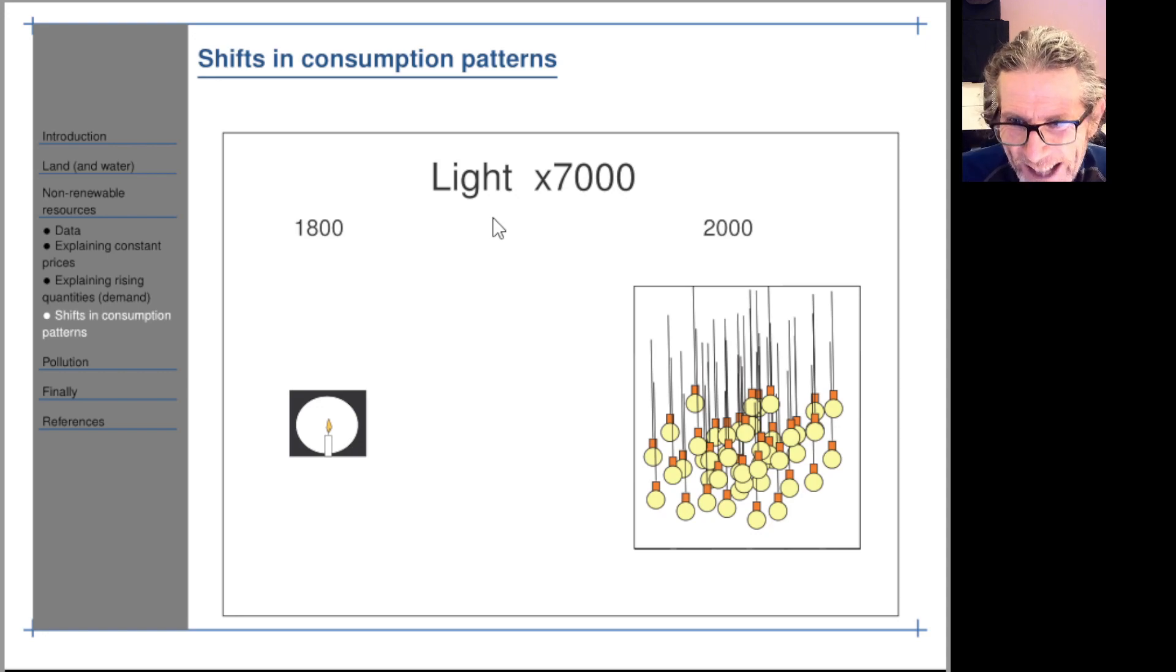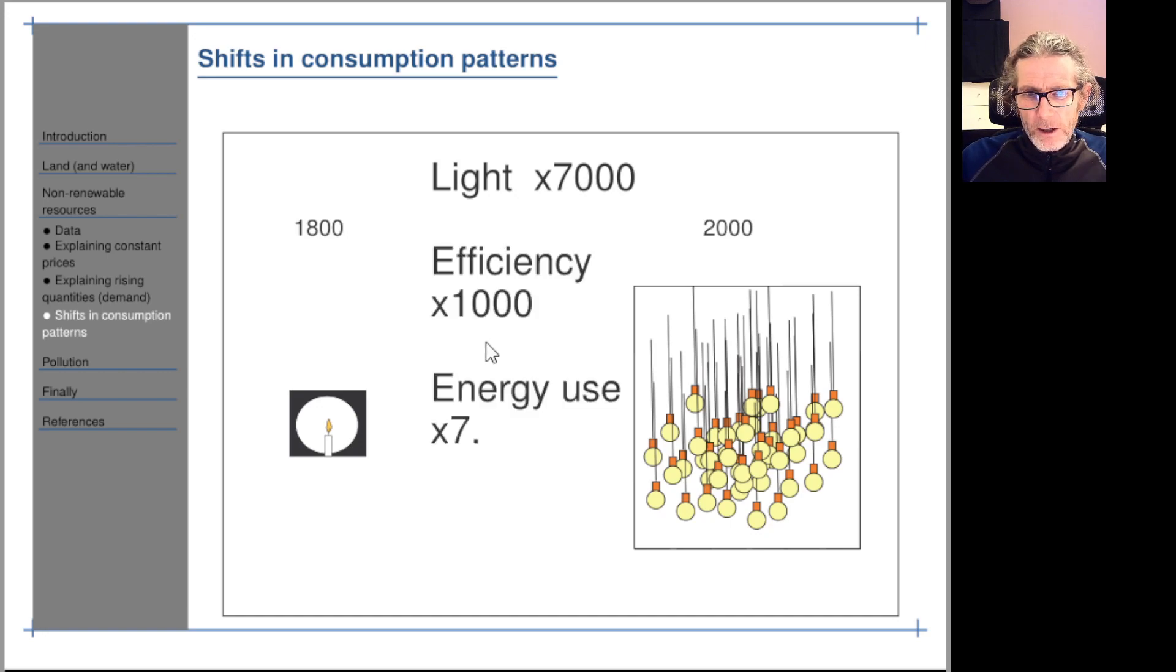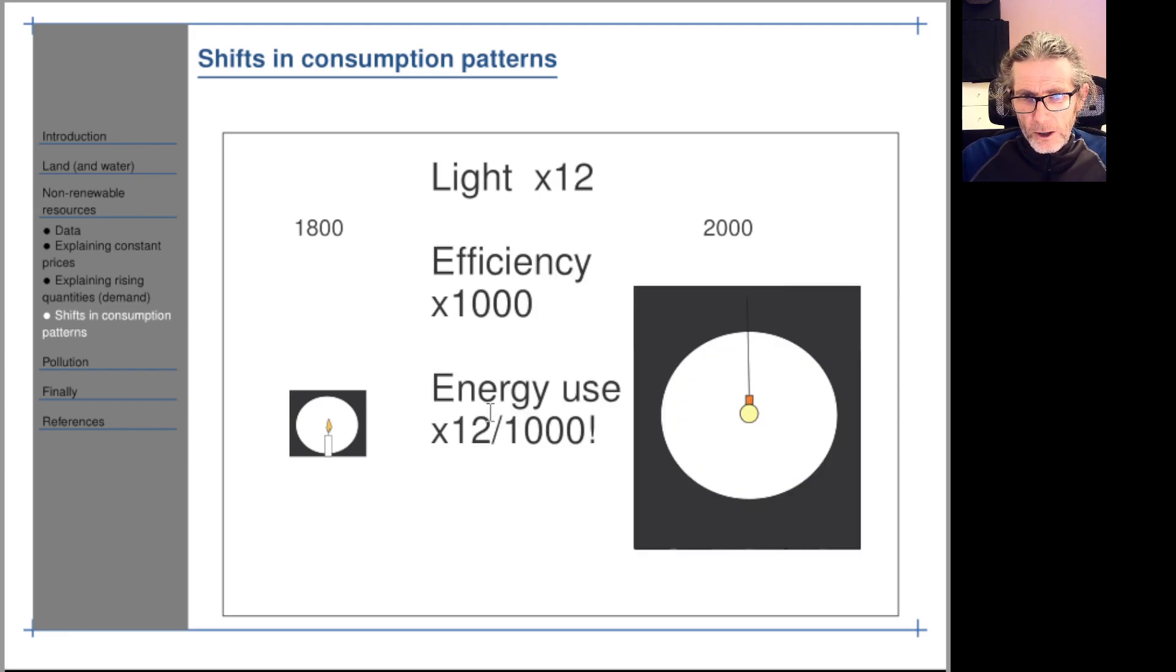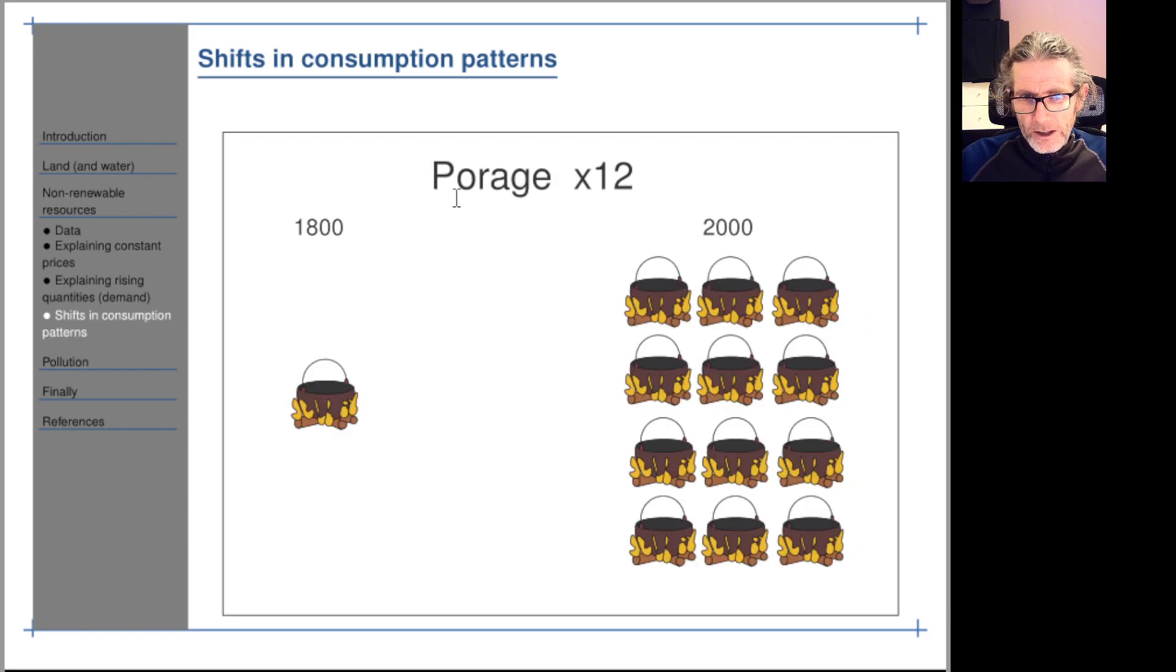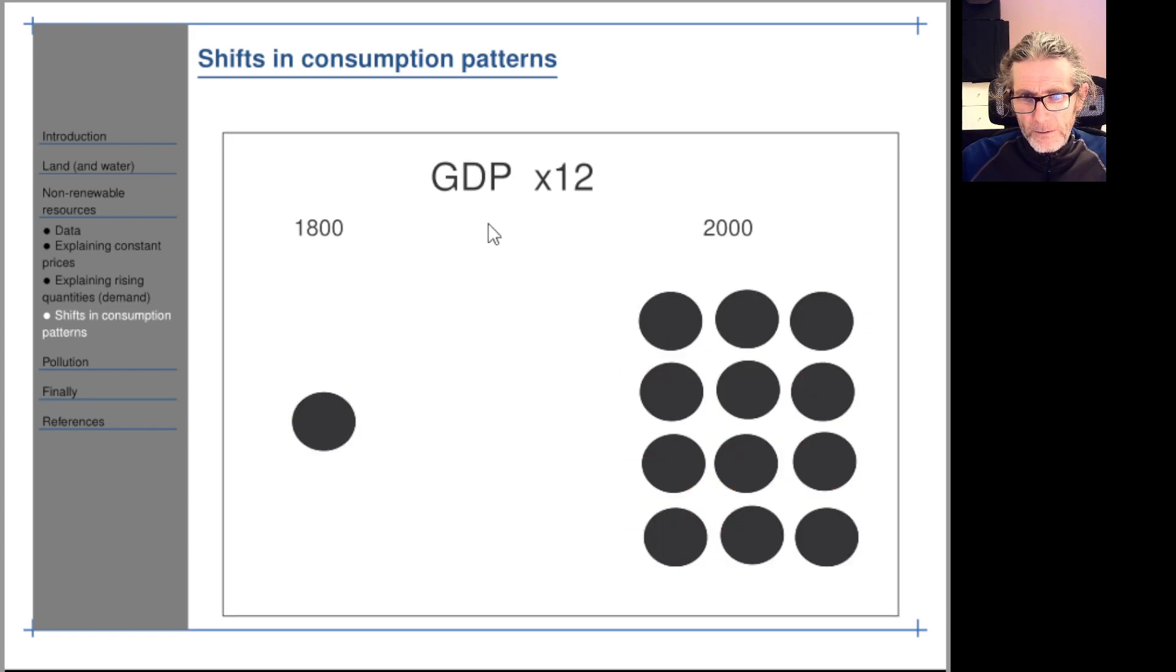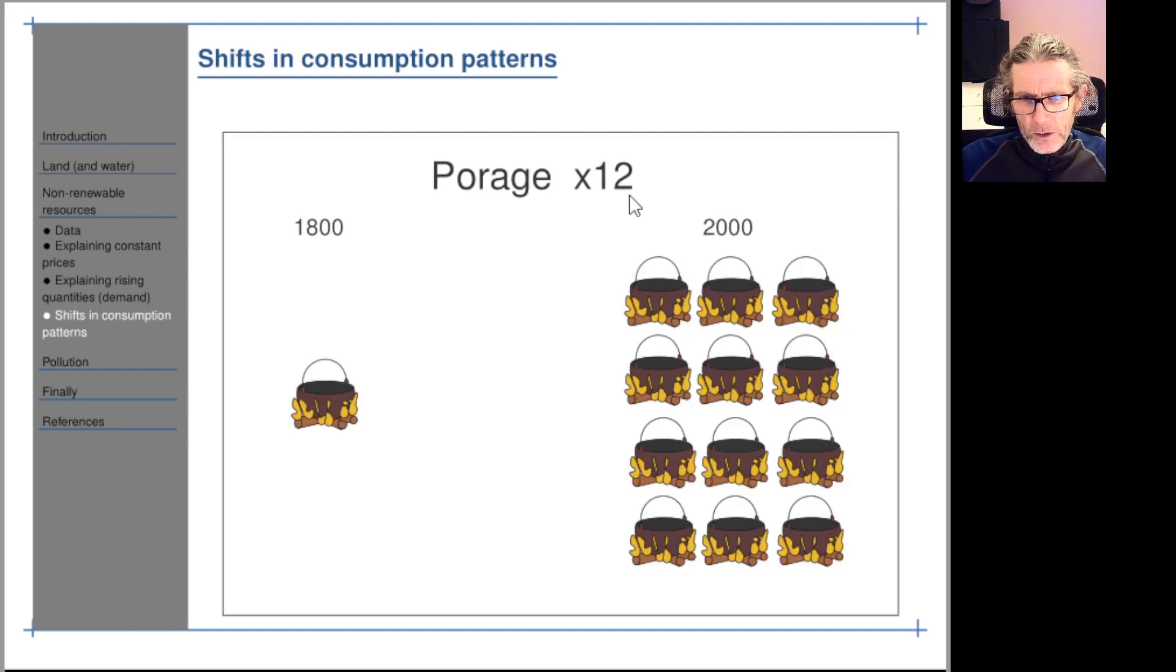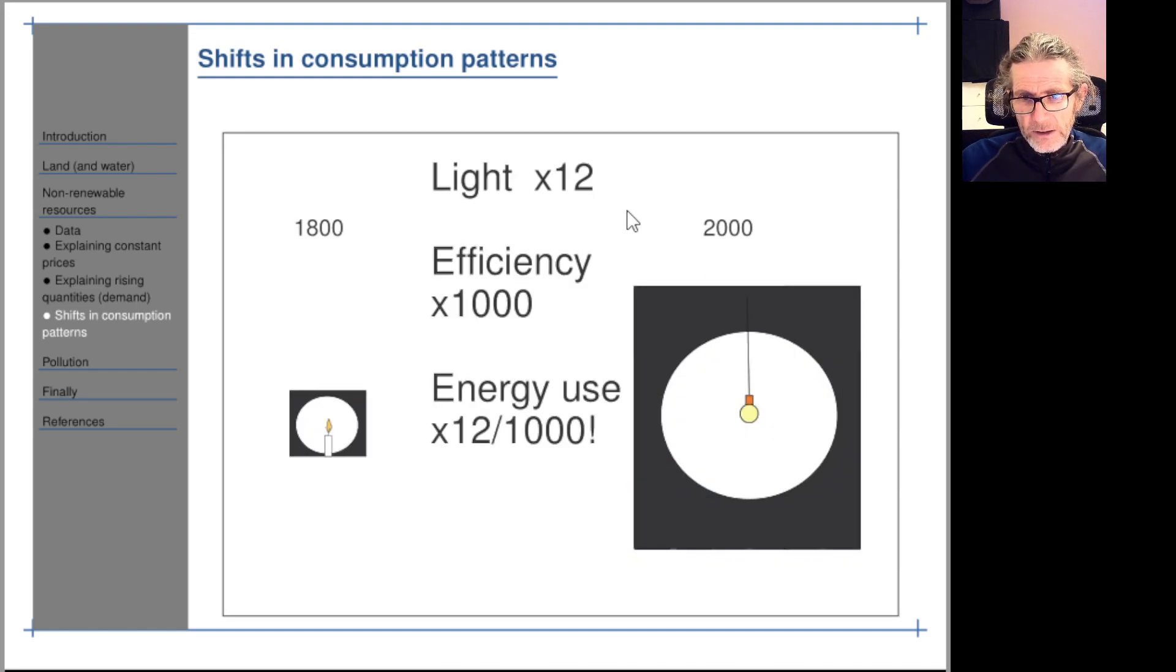But in fact, light production has gone up by a factor of 7,000, not 12 like overall GDP, but 7,000. So given that efficiency has gone up by a thousand, energy use in the sector has gone up by 7, which is not that far off the GDP increase of 12. You can see the way the energy use is roughly tracking GDP in the Swedish data for the lighting sector.